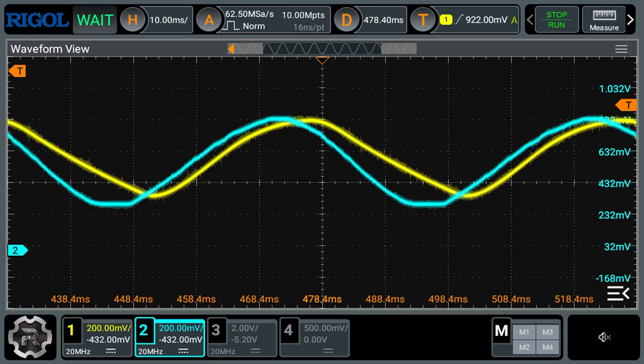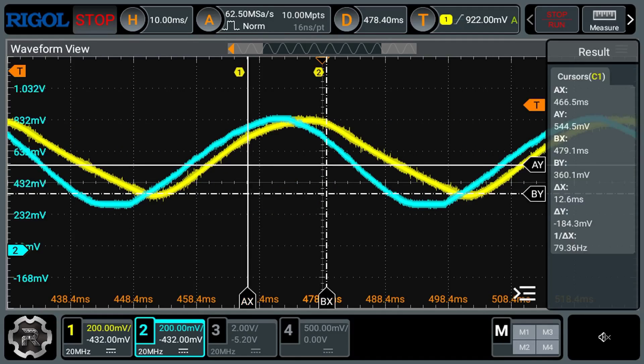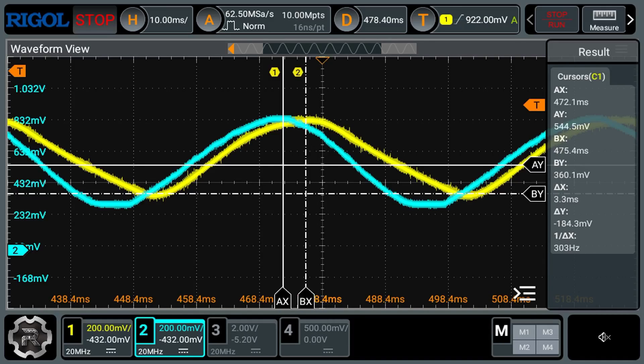Channel 1, the yellow trace, is the hall joystick. And channel 2, the green trace, is the potentiometer joystick. I'll position the cursor in about the middle of the peaks. So around 4 milliseconds, not bad.